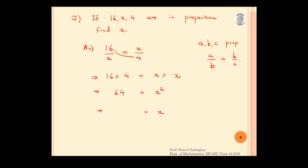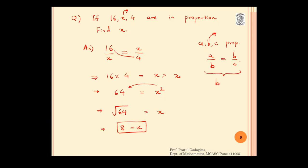So X squared equals 64. Taking the square root, X equals the square root of 64. Using the calculator, the square root of 64 is 8, so X equals 8. This central value X — the B in the proportion — is called the geometric mean, or it is also called the mean proportion.